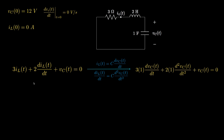We could have instead manipulated our original equation into a second-order differential equation in terms of the inductor current. But it's often simpler, when the inductor and capacitor are in series, to first solve for the capacitor voltage and then use that to solve for any other voltage or current in the circuit.